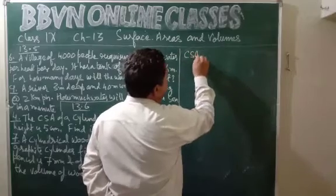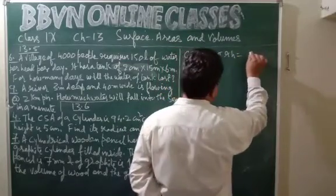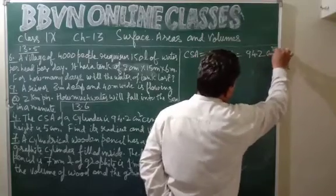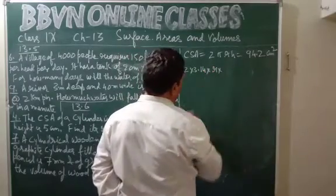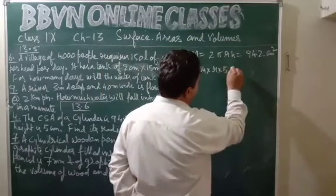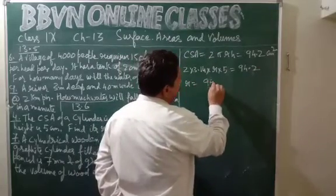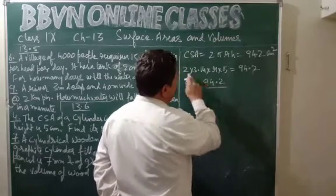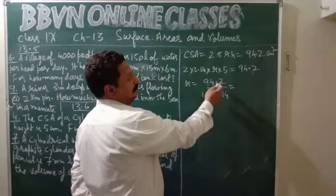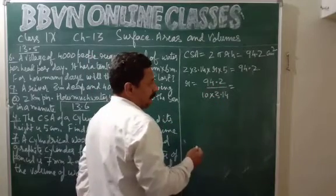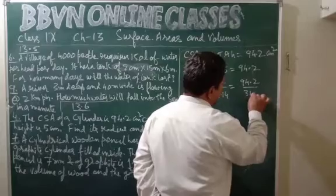Given: curved surface area is 2 pi r h, this is given as 94.2 centimeter square. So 2 into 3.14 into r into height 5 centimeters equals 94.2. Therefore r equals 94.2 divided by 2 into 5 into 3.14, which is 94.2 upon 31.4. There are two places after the decimal in the numerator and one place in the denominator. Multiplying 10 into the denominator gives 94.2 divided by 31.4.